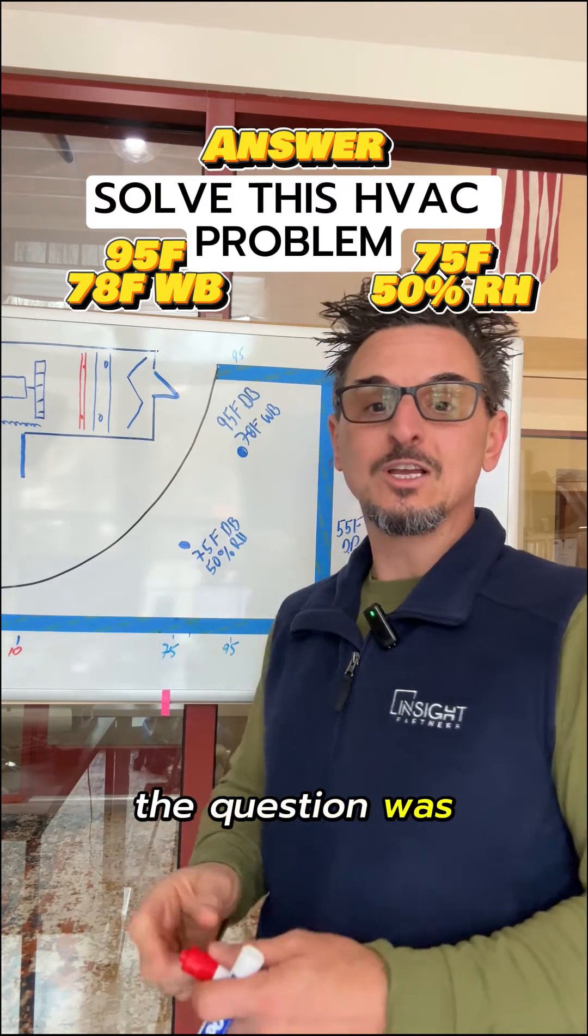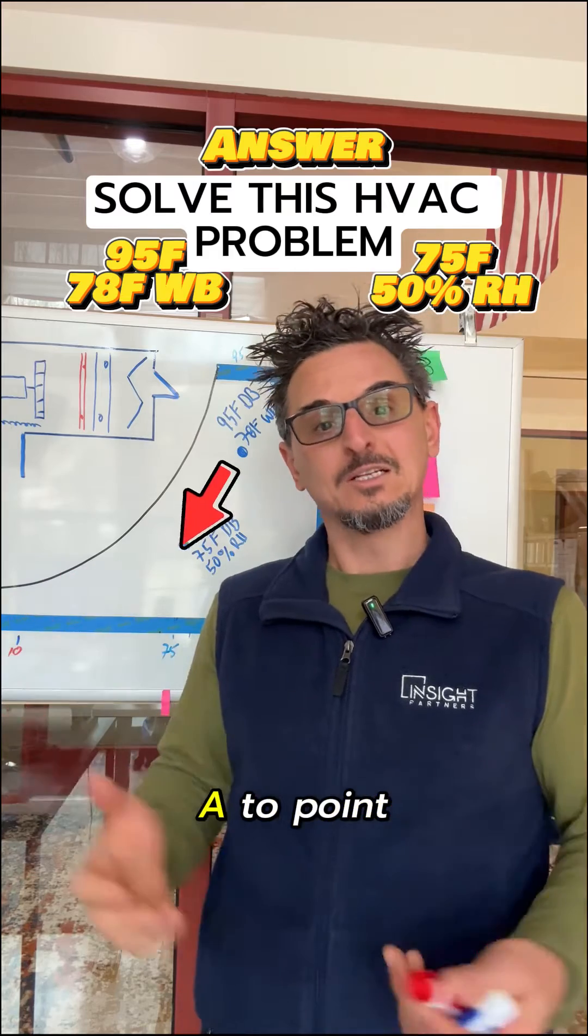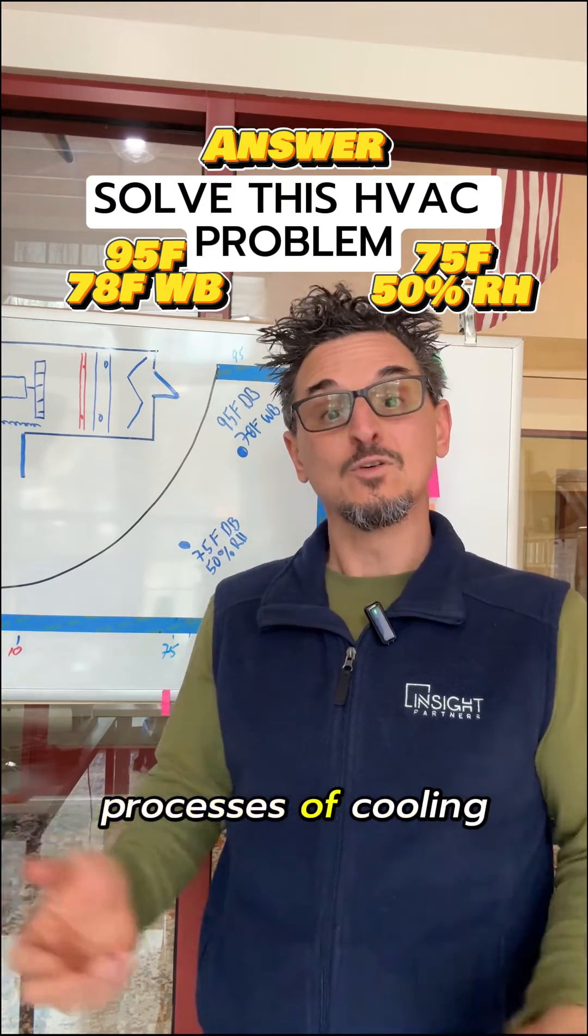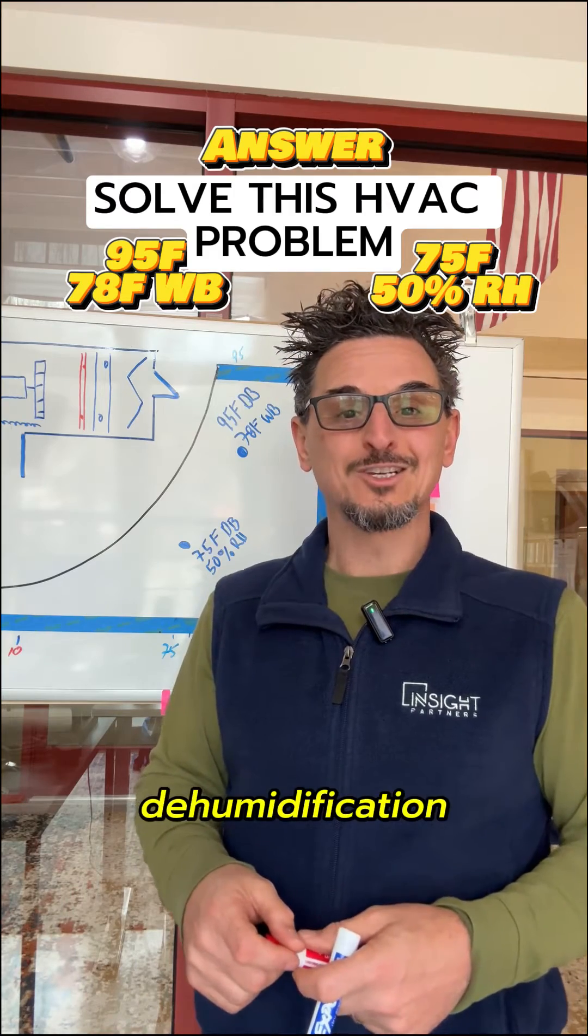So the question was, how do you get from point A to point B using the psychrometric processes of cooling, dehumidification, and heating?